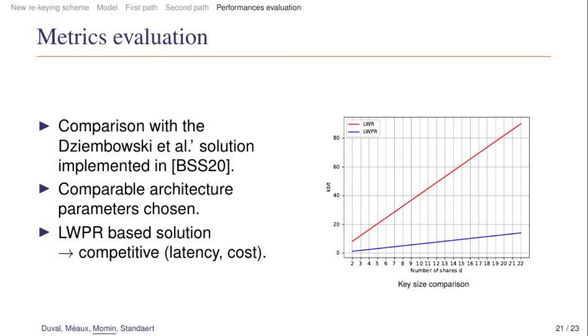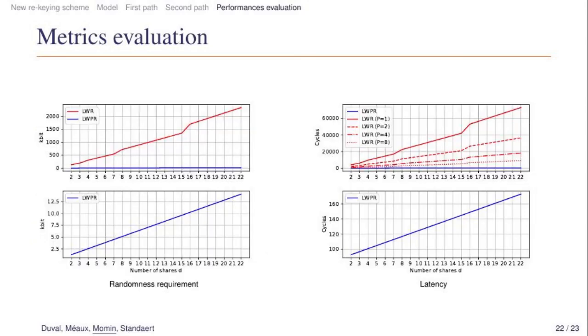Regarding the performance metrics, our rekeying proposal based on the LWPR assumption appears to be competitive both in terms of latency and cost. As a first metric, the key size is shown in kilobits: in red for the Bronchain implementation of the LWPR-based solution, and in blue for our implementation. While both curves are linear with the amount of shares, the one of the LWPR-based solution has a slope approximately 5 times smaller than the LWR solution. The difference is even more significant when comparing randomness requirement and latency, because these underline that even with more parallelism, the LWR-based solution is orders of magnitude slower. And the same kind of trend can be observed for the randomness requirement.